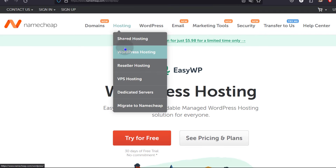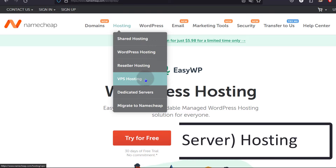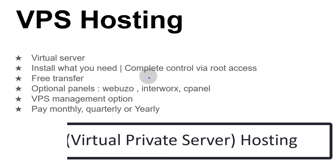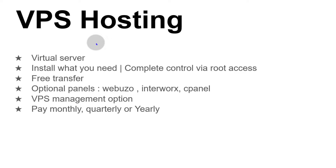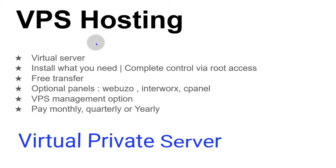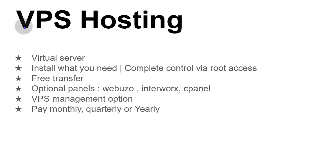After EasyWP, let's talk about VPS hosting. VPS hosting is a virtual server that you get from Namecheap. You can install whatever you need on it — this is like getting your own virtual machine. VPS stands for Virtual Private Server. On this server you can install whatever you need: if you want to run multiple websites, you can install cPanel or any free control panel to manage them. You have root access, giving you the power to install anything you need. If you're already on another platform, you can go to Namecheap support and request a free transfer.